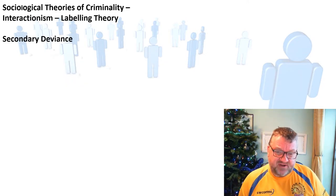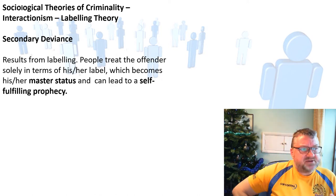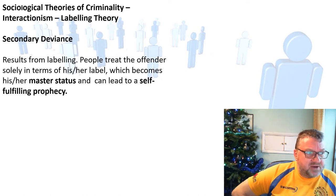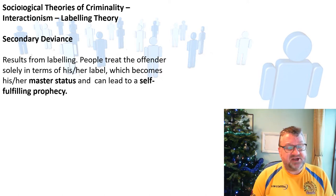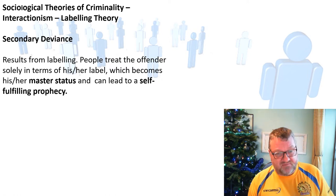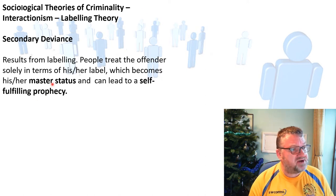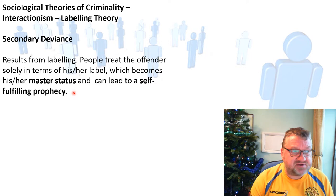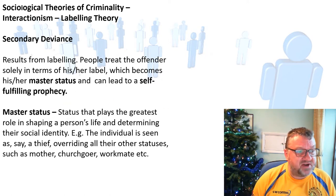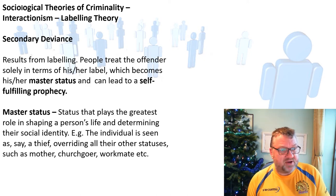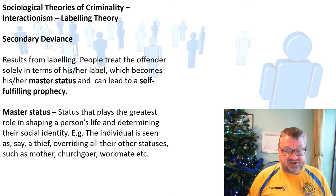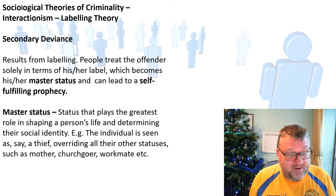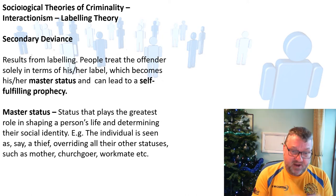Secondary deviance is more severe and results from labelling. People treat the offender solely in terms of his or her label, which becomes their master status, and this can lead to a self-fulfilling prophecy. Master status is the status that plays the greatest role in shaping a person's life and determining their social identity. For instance, an individual is seen as a thief — that overrides all other statuses such as mother, churchgoer, or workman. They are labelled as a thief; that's what they become — that's their master status.